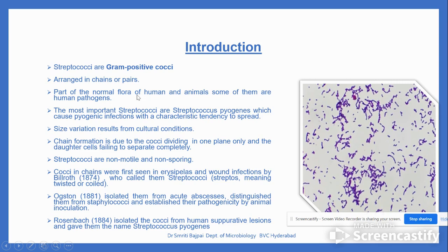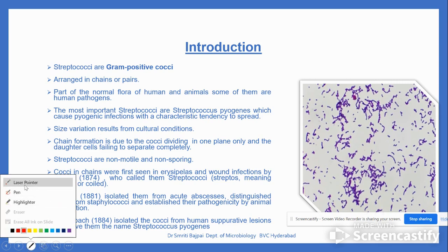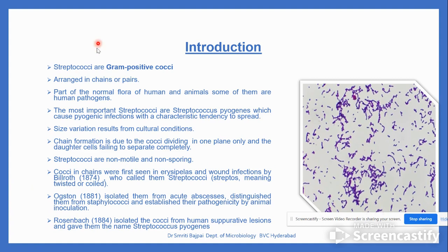Streptococcus are gram-positive cocci. They are arranged in chains or pairs. These are part of normal human flora and many other animals. Some of them are human pathogens also.